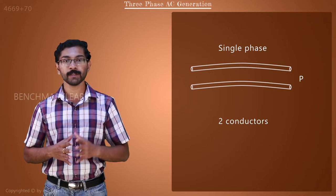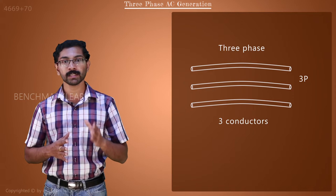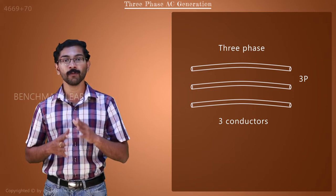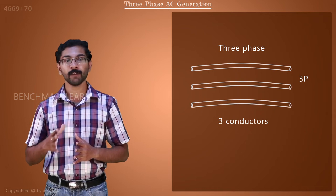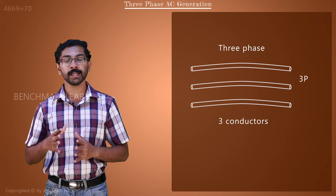With three-phase power, we can transmit three times the power with just 1.5 times the conductor that is required for a single-phase AC. A three-phase system consists of three conductors to transmit three times the power.